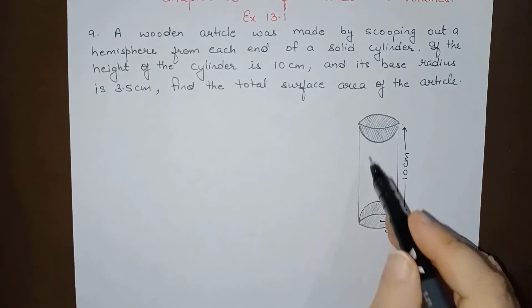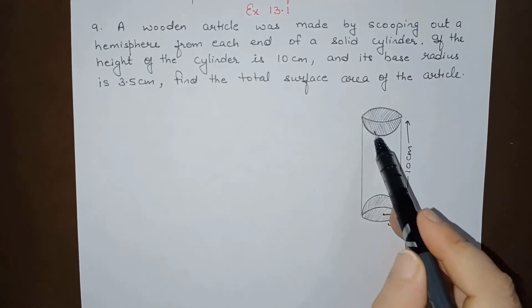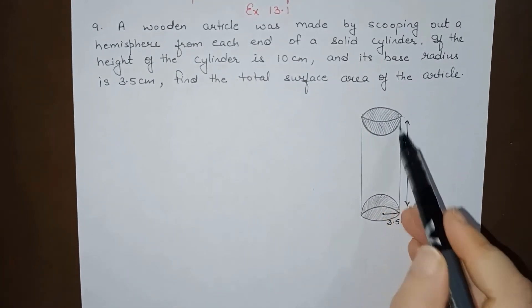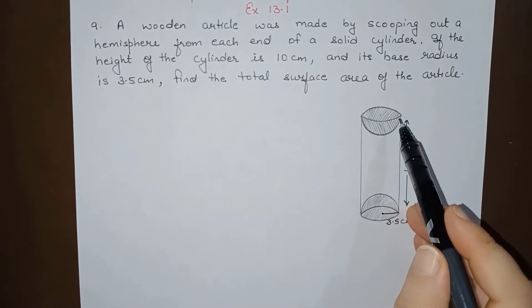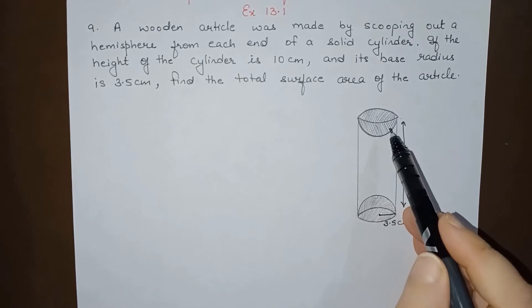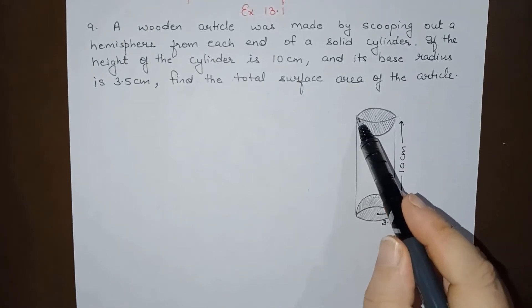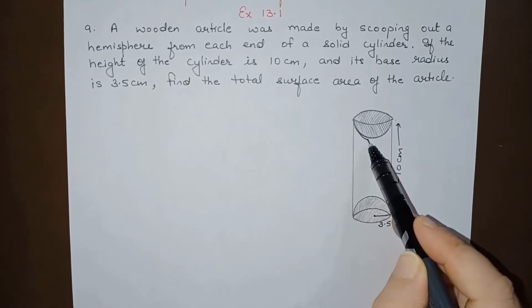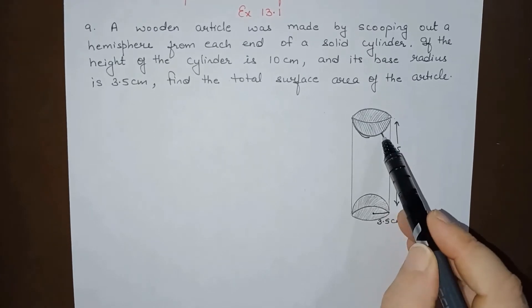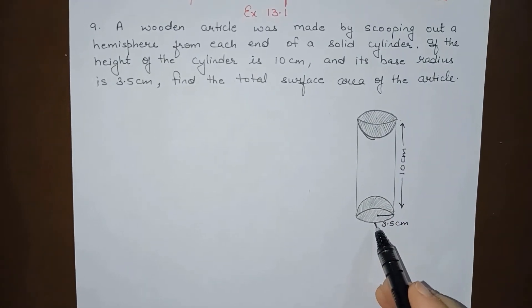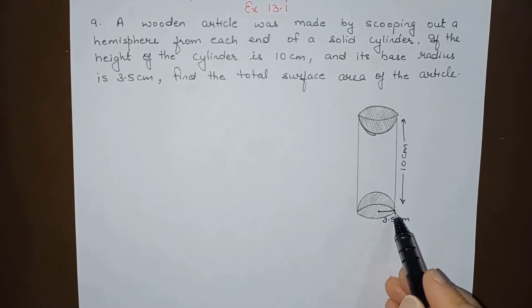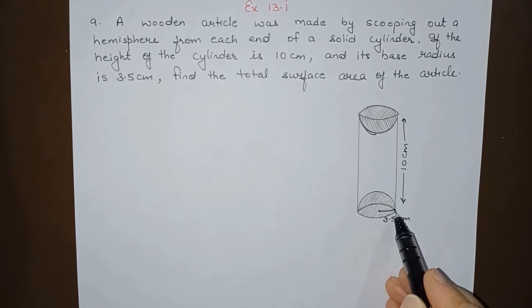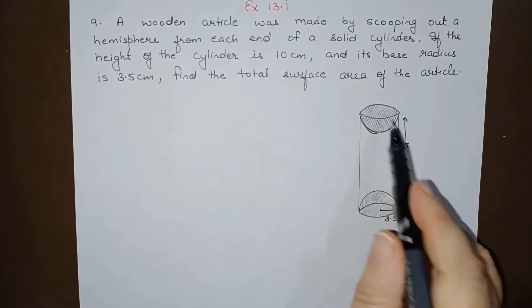Now, this was a cylinder first, and from the cylinder this part, the semicircular part, is scooped out—that means taken out. That means when we see this cylinder from the top, we can see this hemispherical depression. Similarly, when we see it from the bottom, we will again see a hemispherical depression.